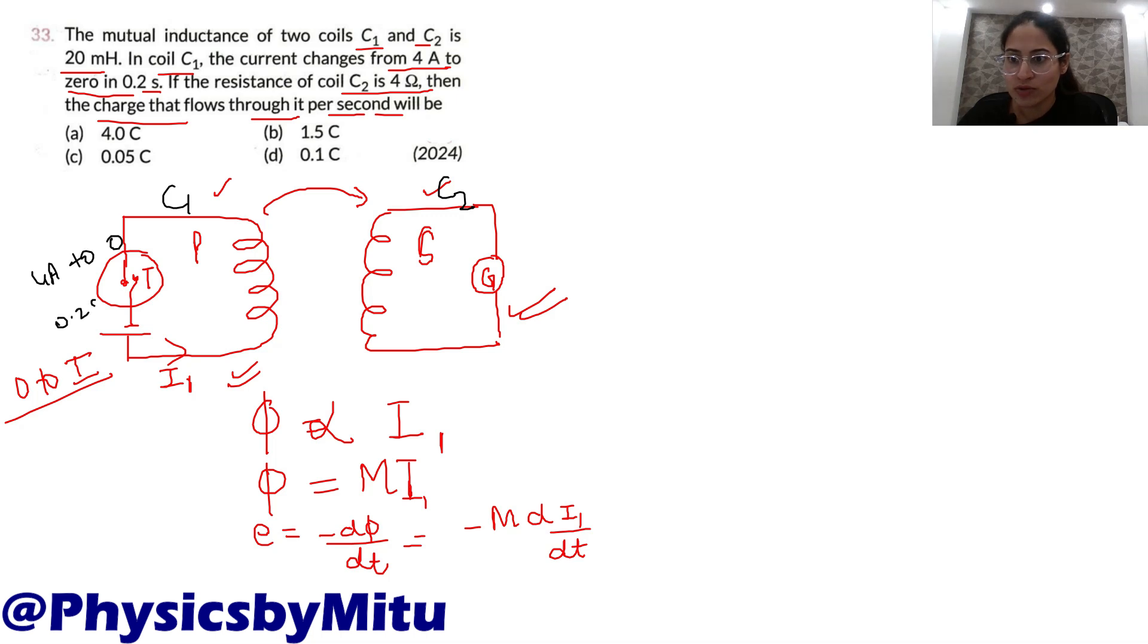Resistance of coil C2 is 4 ohm. You have to find the charge in the second coil. The formula for EMF is -M·di/dt.